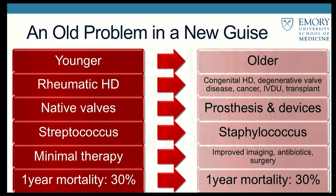Streptococcus was the primary bacteria causing endocarditis, and in certain areas still is, but staphylococcus is catching up due to frequent IV sticks and catheters that expose patients to staphylococcus bacteremia. Before penicillin we had minimal therapy, but now we have improved imaging, antibiotics, and surgery. However, due to the changing demographics and risk factor profile, the one-year mortality has remained the same at about 30%.